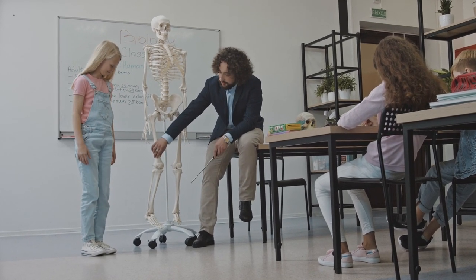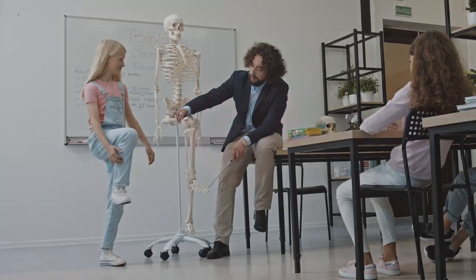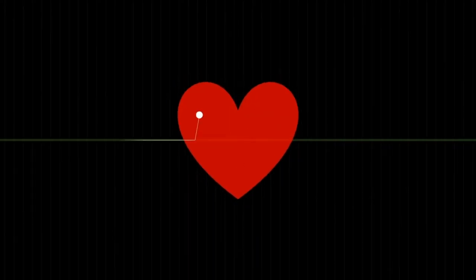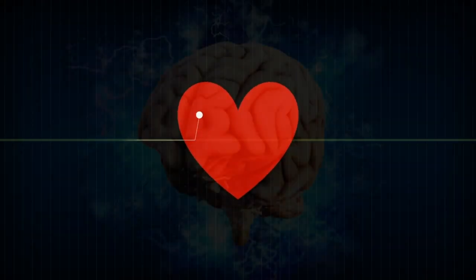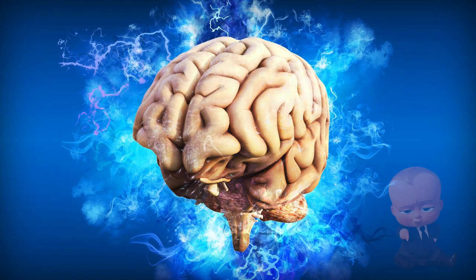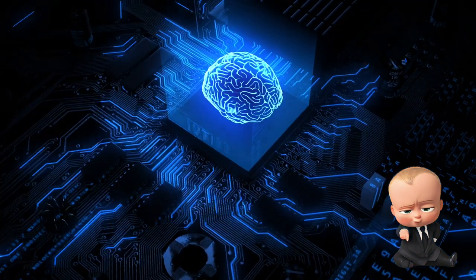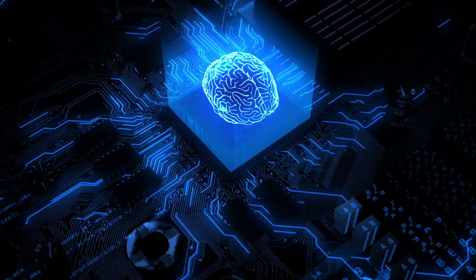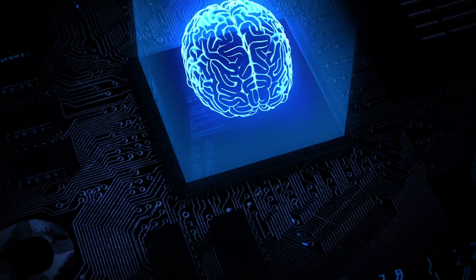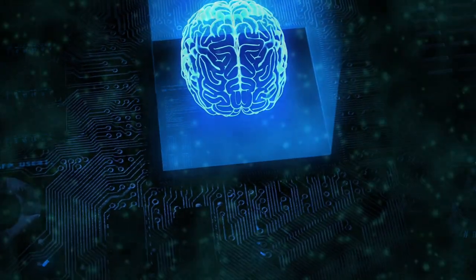The human brain is in charge of everything that your body does, even the things that you don't think about like breathing or keeping your heart pumping. In fact, your brain is the boss of your body. It's like an extremely powerful computer, storing our memories and controlling our thoughts and body.